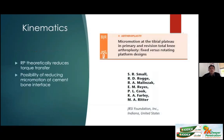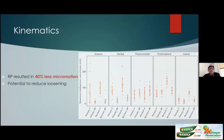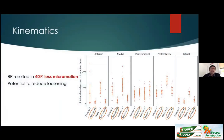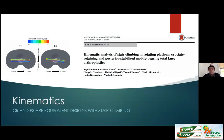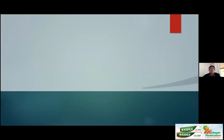Regarding rotating platform revision data, Ritter's group in Indiana found that a rotating platform design results in 40% less micromotion at the implant-cement interface, theoretically offering better kinematics and survival. When comparing cruciate retaining versus posterior stabilized designs in rotating platform knees, there seems to be no difference in kinematics with stair climbing — both equally preserved, offering some functional advantage.